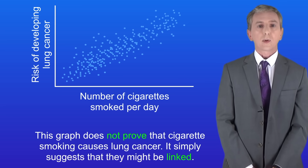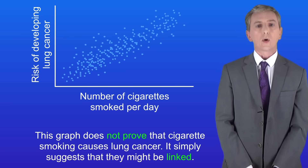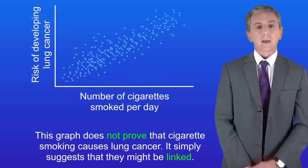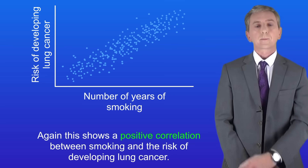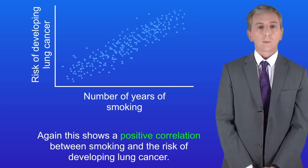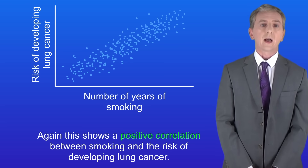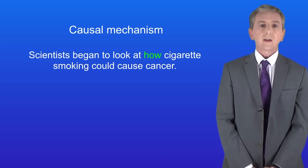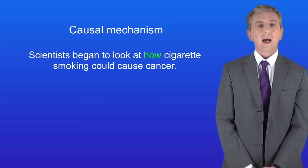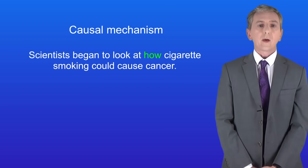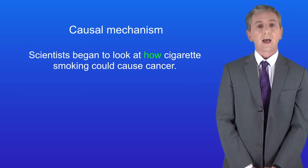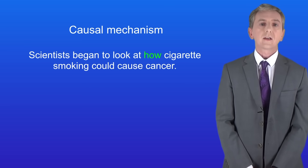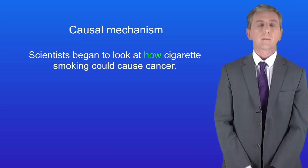Next, scientists plotted the number of years that a person smoked against the risk of developing lung cancer, and again they got a positive correlation. At this stage, scientists began to look at how cigarette smoking could cause cancer — in other words, whether there was any scientific explanation for how this could happen. Scientists call that a causal mechanism.